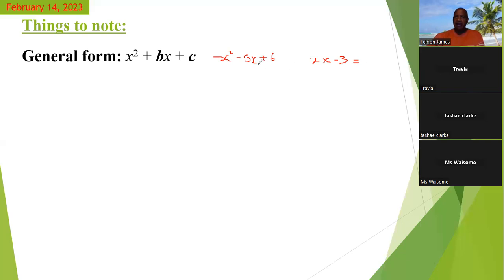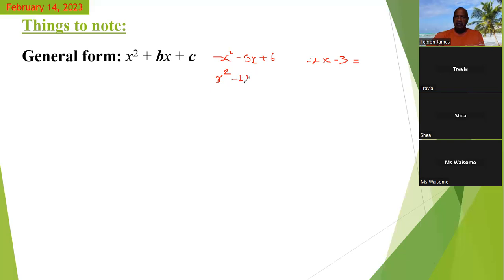A negative six. But would that satisfy the last term here? No, sir, so it would be negative two and negative three. So now, what we do now, we can replace the middle term, which is negative five, with negative two X and negative three X, plus six.